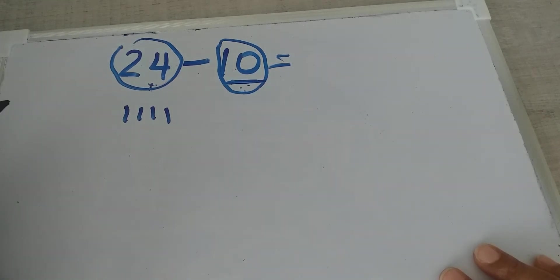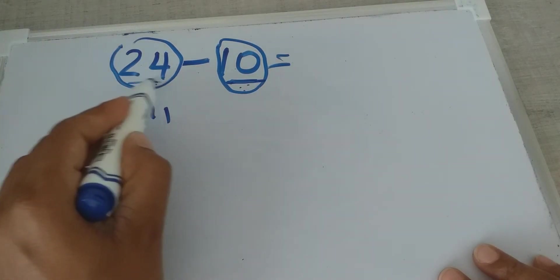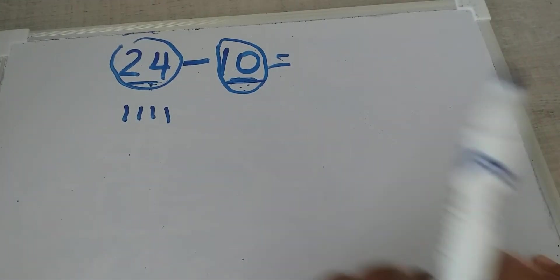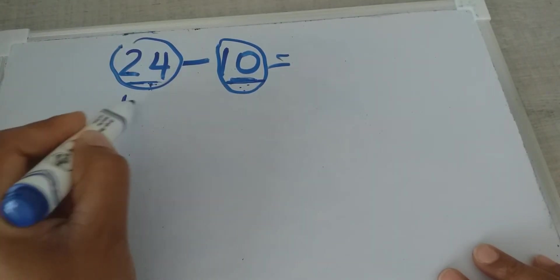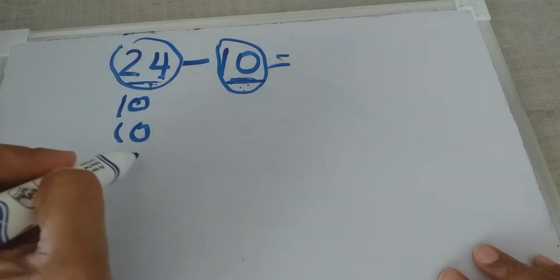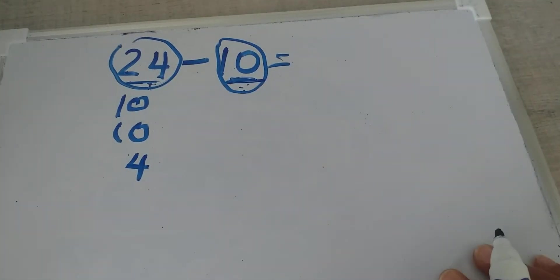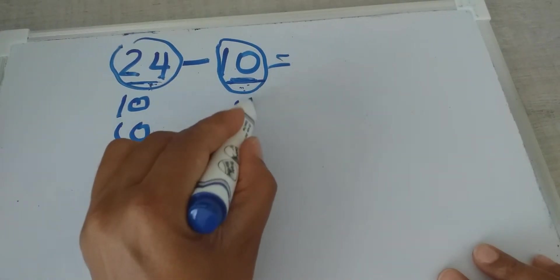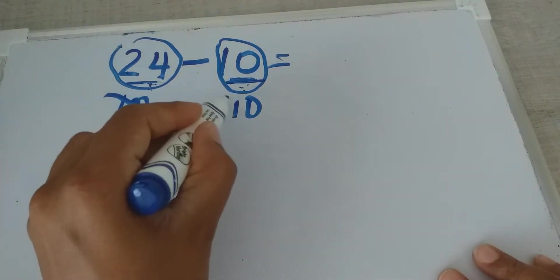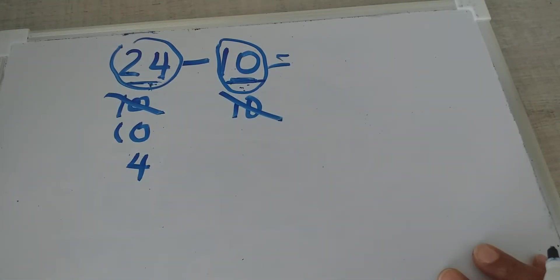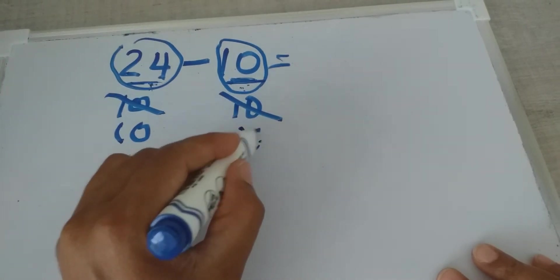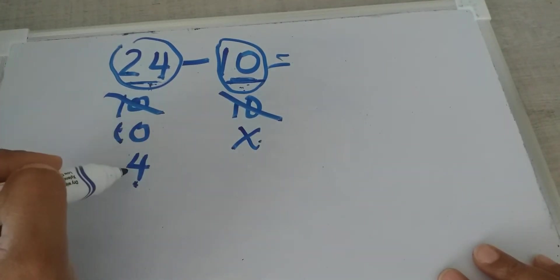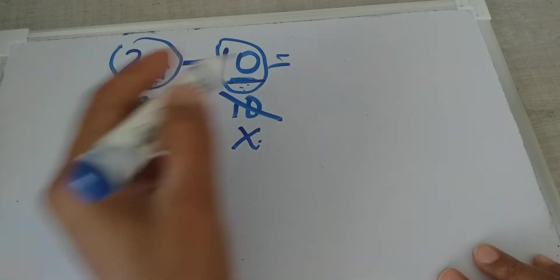If you have a small child they can count; if you have a bigger child they can subtract. How many tens are in 24? There are two tens — one ten and one ten — and a one here. I take out one ten. How many tens are left? One ten. How many ones are left? Four. So 10 plus 4 equals 14. The answer is 14.